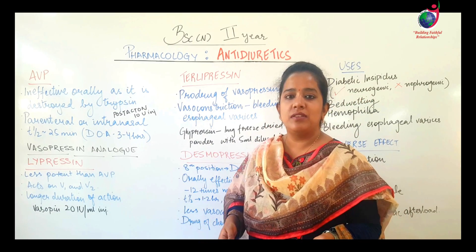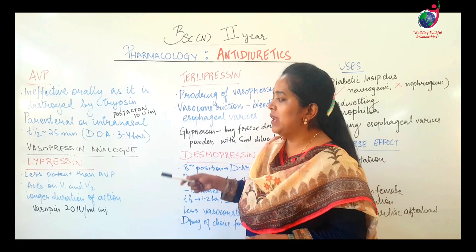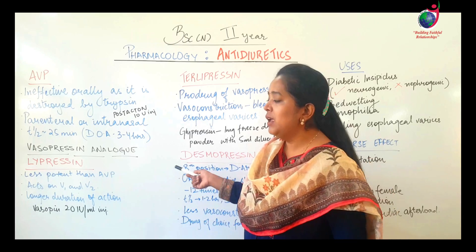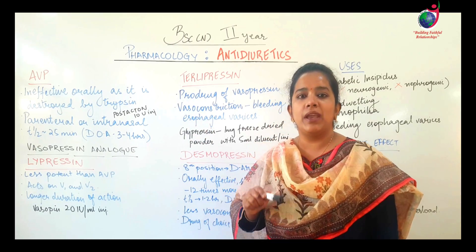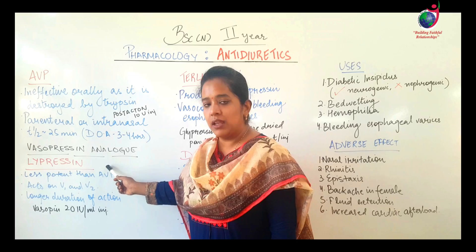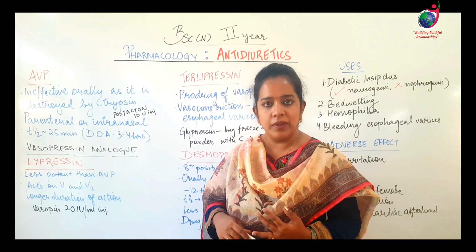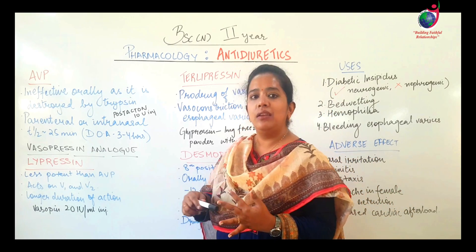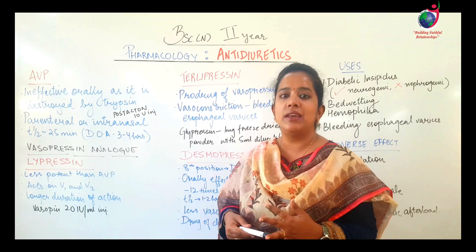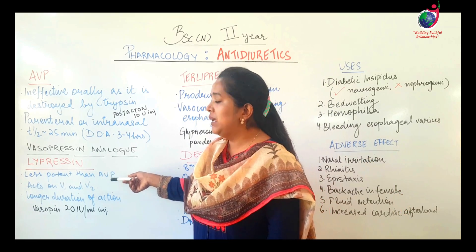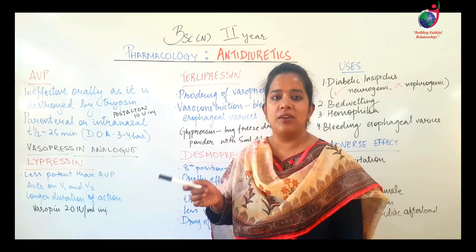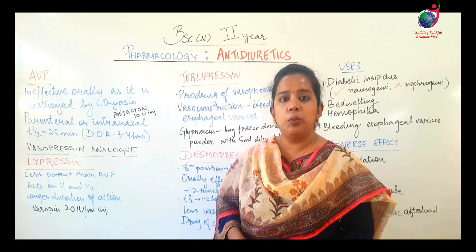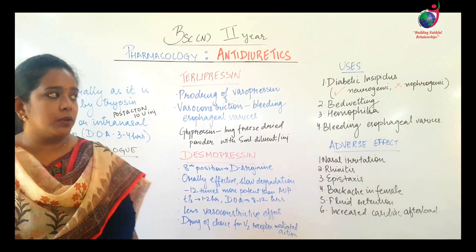Regarding vasopressin analogues, the first is lypressin, derived from pig or swine, with lysine at the eighth position. Lypressin is less potent than AVP but has a longer duration of action, which is why it can be used. It acts on both V1 and V2 receptors. The drug formulation used is vasopin, 20 international units per mL, as an injectable.